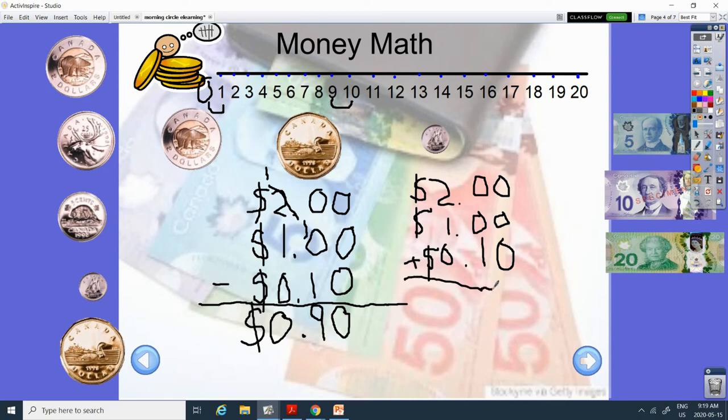Okay. So I've got 0 plus 0 plus 0 is 0. 0 plus 0 plus 1 is 1. Decimal. And now we have 2 plus 1. So start at 2. Count 1. It's 3. And 3 plus 0 is still 3.